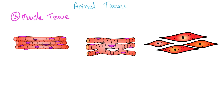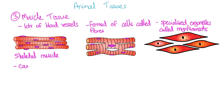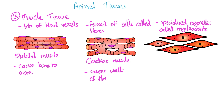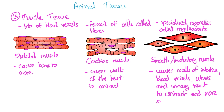Muscle tissue. The common features of muscle tissue are that it has lots of blood vessels, the cells are called fibres, and muscle cells contain specialised organelles called myofibrils which allow the structures to contract. There are three types of muscle tissue: skeletal muscle, which causes your bones to move; cardiac muscle, found in the walls of the heart, which causes the heart to beat; and smooth or involuntary muscle, found in the walls of the intestine, blood vessels, uterus and urinary tract, where rhythmic contracting and relaxing forces substances through these tubes — an example is peristalsis in the small intestine.